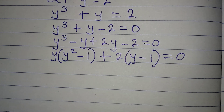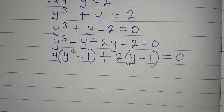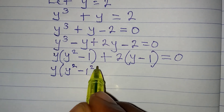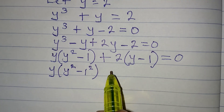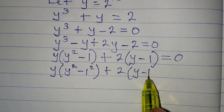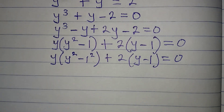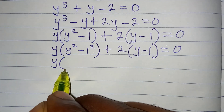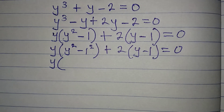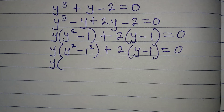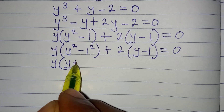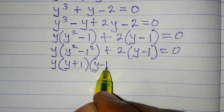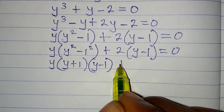The brackets are not the same yet, but we rewrite y² − 1 as y² − 1², so we can apply the difference of two squares. Applying the difference of two squares gives y(y + 1)(y − 1) + 2(y − 1) = 0.